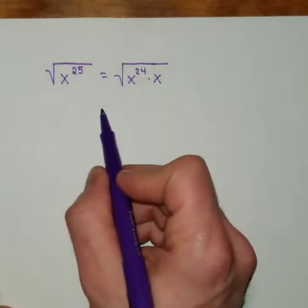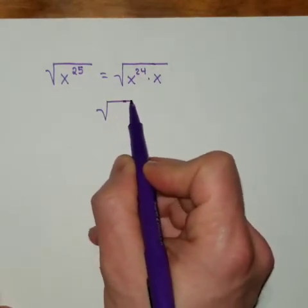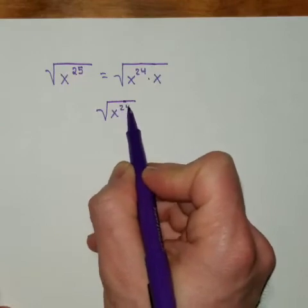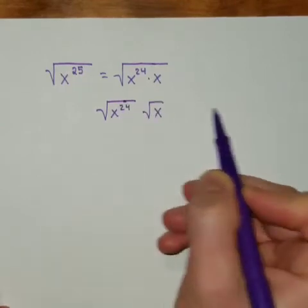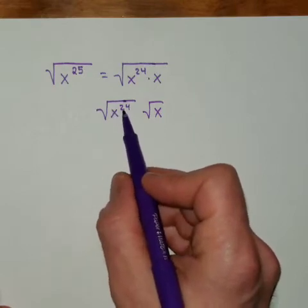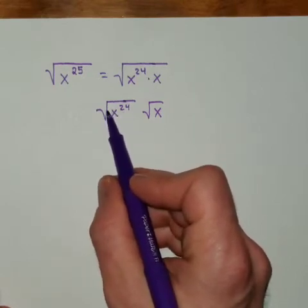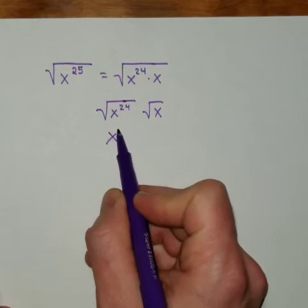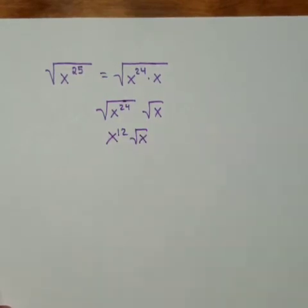Then we do the square root of each one separately, so it would be x to the 24th and root x. We take the 24 and cut it in half when we do power, so this becomes x to the 12th times the square root of x.